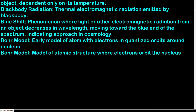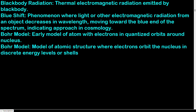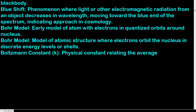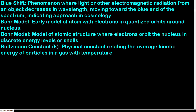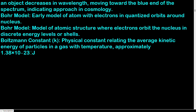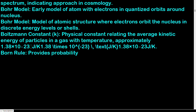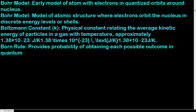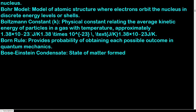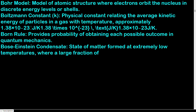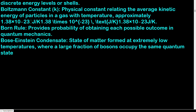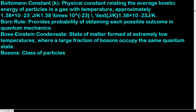Boltzmann constant (k): physical constant relating the average kinetic energy of particles in a gas with temperature; approximately 1.38 × 10⁻²³ J/K. Born rule: provides the probability of obtaining each possible outcome in quantum mechanics. Bose-Einstein condensate: state of matter formed at extremely low temperatures where a large fraction of bosons occupy the same quantum state.